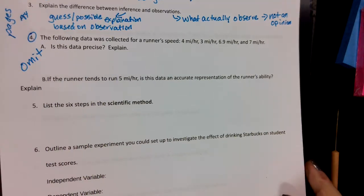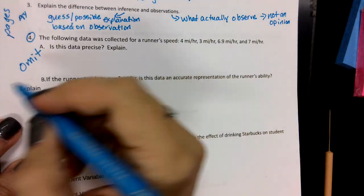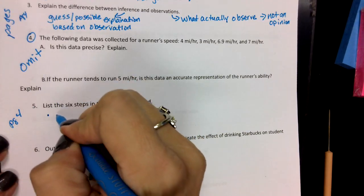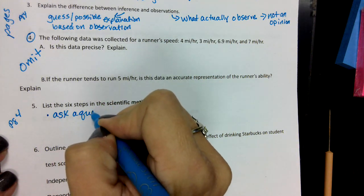Six steps of the scientific method. These are numbered in your notes. So this is in page four. So you had—what, Camden? Ask a question. Ask a question.